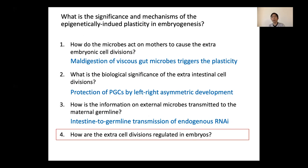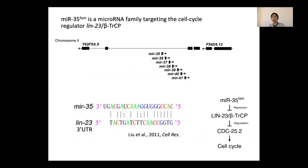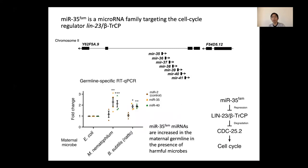The last question is: how is the extra cell division regulated in embryos? We focused on microRNAs of the MIR-35 family as potential epigenetic regulators. There are eight members of the MIR-35 family in the C. elegans genome, and seven out of eight form a gene cluster. We focused on them because their expression is highly enriched in the germline, and they positively regulate intestinal cell numbers by targeting the 3' UTR of a gene named LIN-23, the C. elegans homolog of beta-TRCP, which negatively regulates the cell cycle by degrading the CDC25 phosphatase. We quantified mature microRNAs in the maternal germline and found that microRNAs expressed from the MIR-35 cluster were increased when worms had experienced harmful microbes.